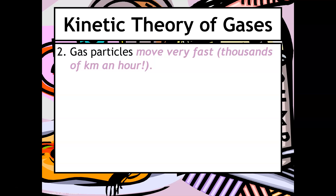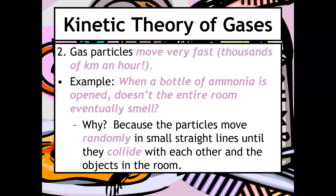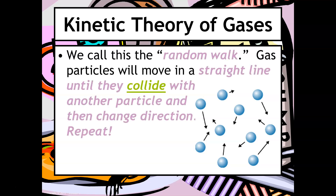Gas particles also move incredibly fast — thousands of kilometers per hour. You know this if somebody shows up at your door with pizza: even on the other side of the room you smell it immediately. Another example is when somebody opens a bottle of ammonia — the entire room will eventually smell. These particles are moving randomly in straight lines until they collide with each other or objects in the room. We describe this as a random walk, where gas particles move in a straight line until they collide with another particle, then change direction, and this repeats.